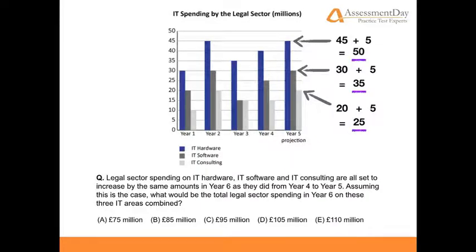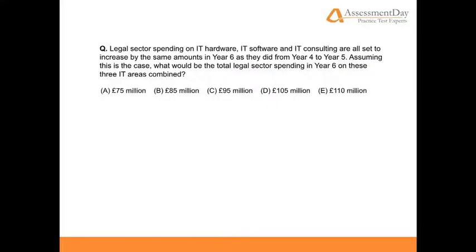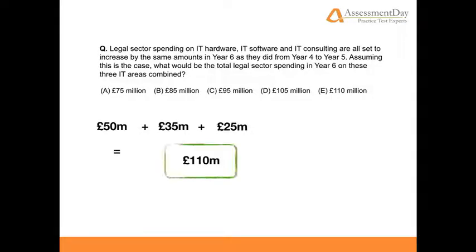With these three figures, the question asks us to calculate their sum. We can say £50 million plus £35 million plus £25 million equals £110 million. There are other ways to calculate the sum, of course, but this is one useful approach. Therefore, our answer is E: £110 million.